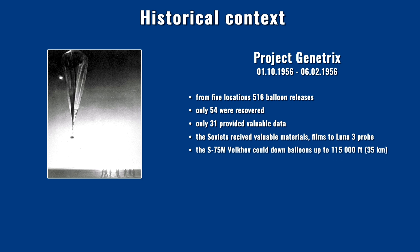The balloons were launched from Norway, Scotland, two locations in West Germany, and Turkey. Of the 516 released, only 54 were recovered, and only 31 provided valuable data. An interesting side note is that the Soviets also benefited from the project. Many lost balloons crashed in the Soviet Union relatively intact. With the film recovered from the lost American spy balloons, it was possible to photograph the far side of the moon — the US-made film withstood the extreme conditions of spaceflight, as Soviet industry was incapable of producing the required film quality. The lunar space probe utilized film from this particular source.